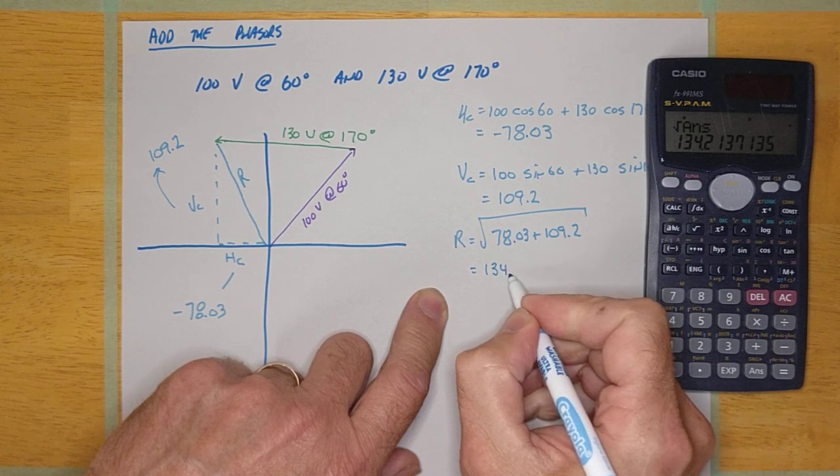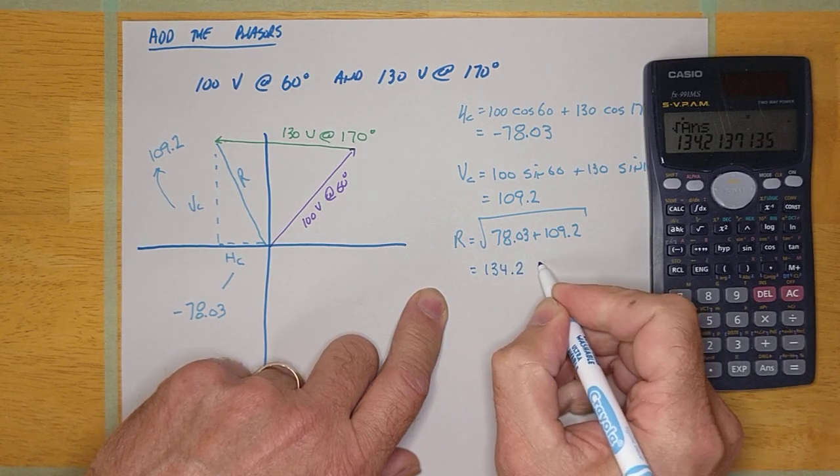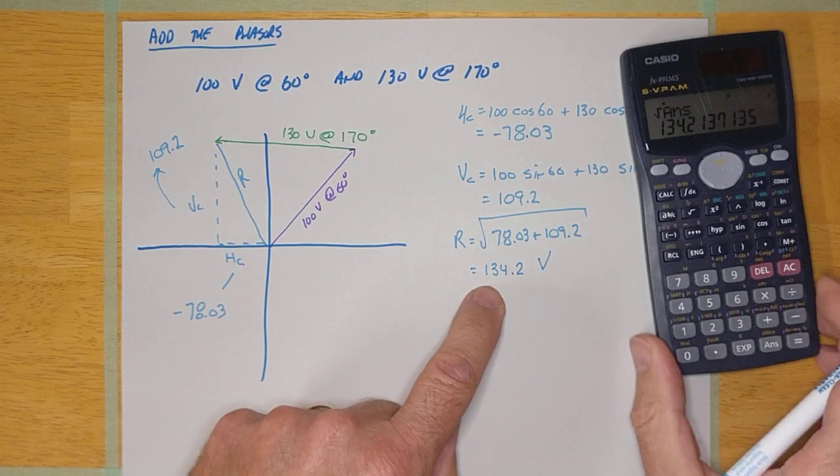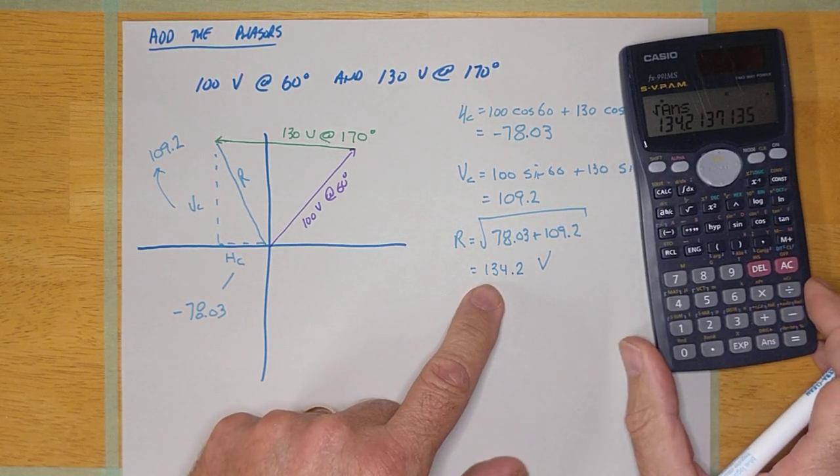So 78.03 squared plus 109.2 squared equals root equals 134.2. See how easy that is? 134.2, and that's volts. The sum of these two voltages is 134.2 volts.